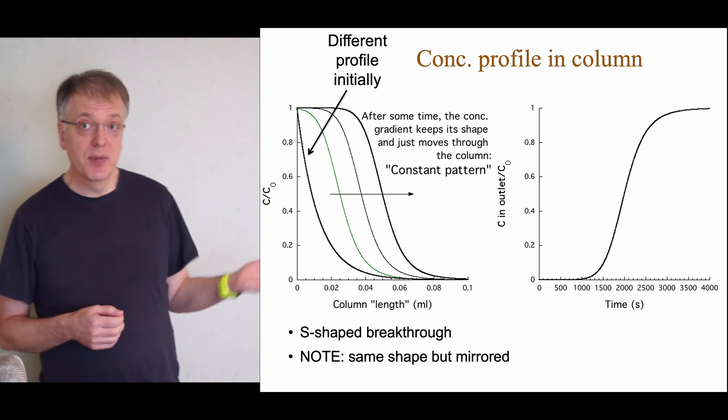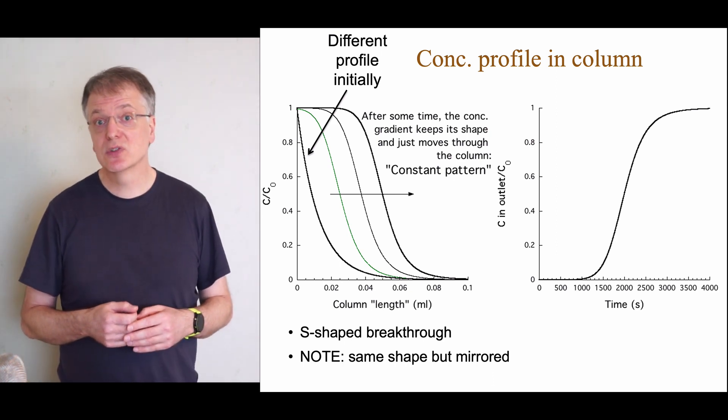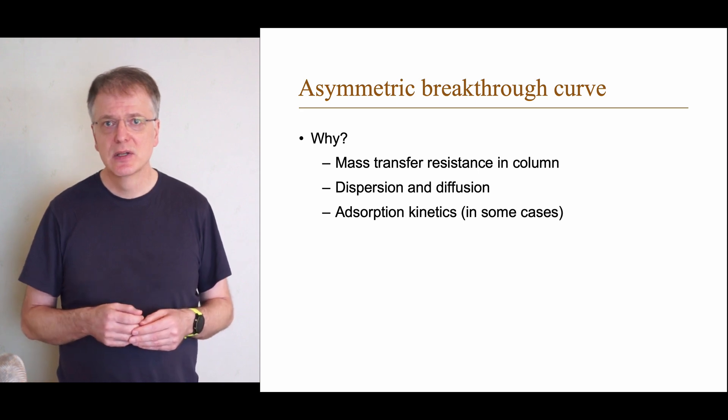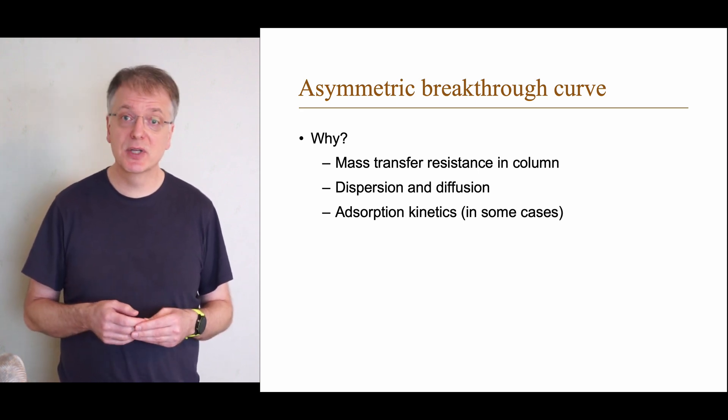The example breakthrough curve shown here was symmetrical, but that is not always the case. So why is the breakthrough curve sometimes asymmetric?